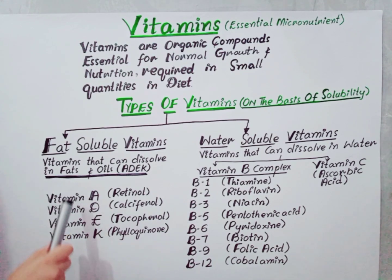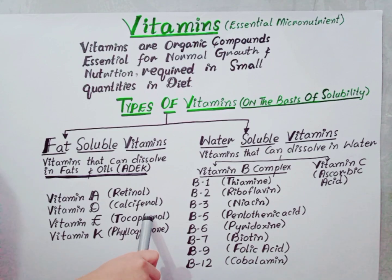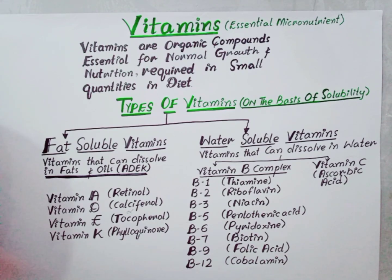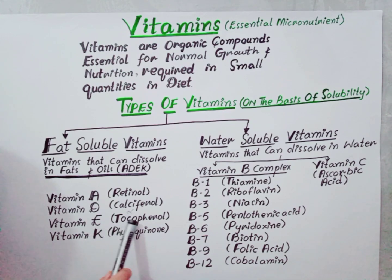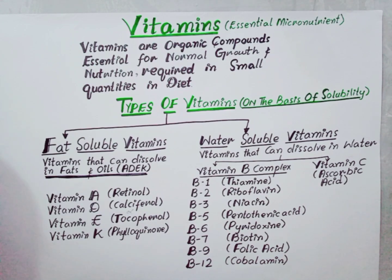Vitamin E, tocopherol, is another fat-soluble vitamin with several forms, but alpha-tocopherol is the only one used by the human body. This is a very important point: vitamin E is present in many forms but alpha-tocopherol is the only one used by the human body. Its main role is to act as an antioxidant.